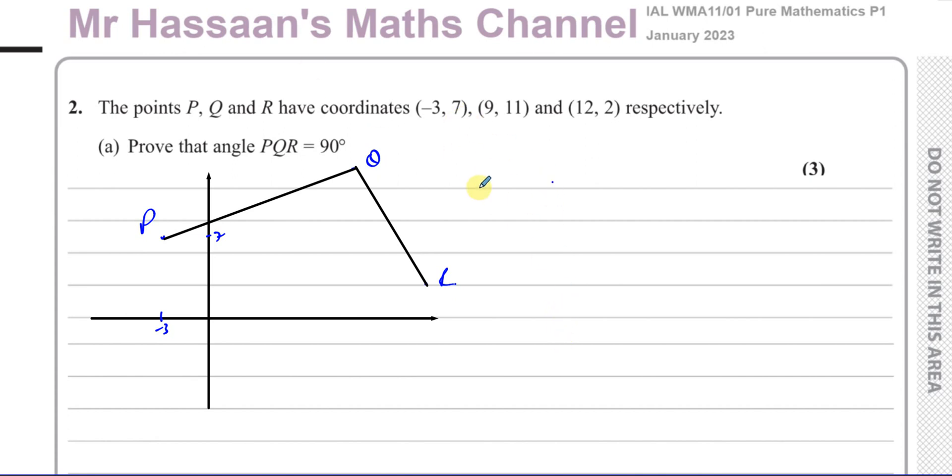So we've got to prove that angle PQR is a right angle. The simplest way to do this would be to find the gradient of line PQ. The gradient of a line is given by the change in Y over the change in X. So 11 minus 7 divided by 9 minus negative 3, which gives you 4 over 12, which is 1 third.